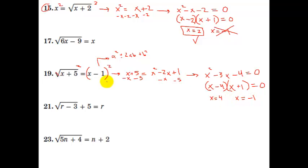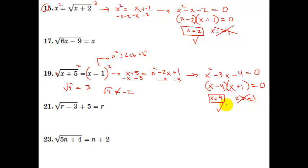Let's plug them back in. If I plug in 4 on the left side, I get the square root of 4 plus 5, which is the square root of 9. On the right side, 4 minus 1 is 3. The square root of 9 is 3, so this one works. For x equals negative 1: I get the square root of negative 1 plus 5, which is the square root of 4, equals negative 1 minus 1, which is negative 2. That does not work, so negative 1 is again an extraneous solution. Now, I know both examples had the positive part working and the negative part not working — however, that's not an always-true rule. You can't just assume that because a value came out negative it won't work. So, be extra cautious and actually plug in each value and check both sides to see if they're the same.